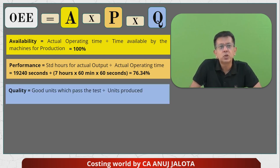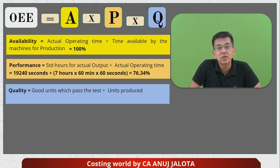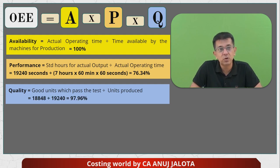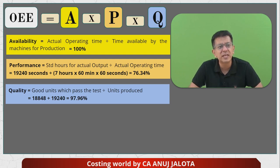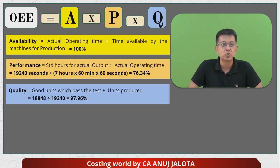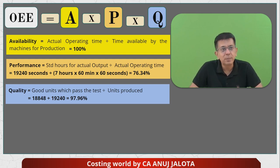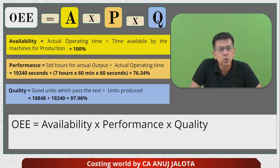The quality ratio means: out of all units produced, how many passed the quality test. We produced 19,240 units, and out of those, 18,848 units passed. Dividing these gives a quality ratio of 97.96%. Now we have all three ratios: availability ratio, performance ratio, and quality ratio.